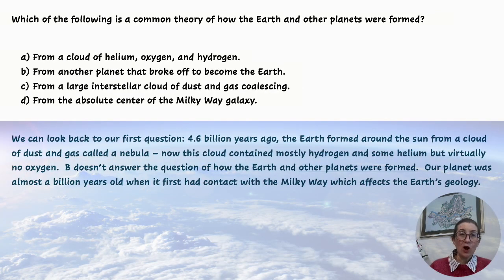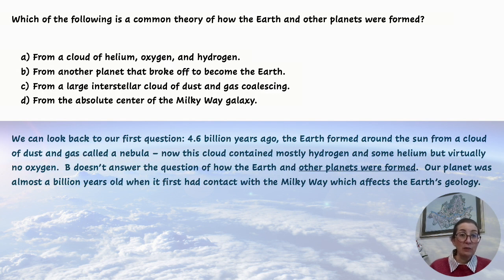Which of the following is a common theory of how the Earth and other planets were formed? A: From a cloud of helium, oxygen, and hydrogen. B: From another planet that broke off to become the Earth. C: From a large interstellar cloud of dust and gas coalescing. D: From the absolute center of the Milky Way galaxy.